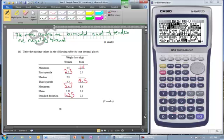Then it says write the missing values in the following table to one decimal place. So this is your minimum, maximum, first quartile, all these kinds of things which is all on your graphic calculator.